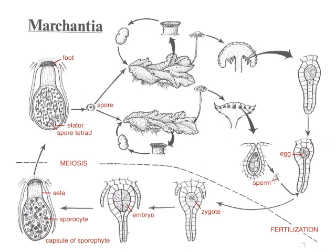Part of the way that they disperse is they get thrown out of the capsule by these little springs called elators, which throw the spores out. Now the spores can be either male spores or female spores, and we can't tell the difference just by looking at them. They disperse and they grow up to be either male gametophytes or female gametophytes. All the cells of this gametophyte, barring a mutation, are all genetically identical to one another.